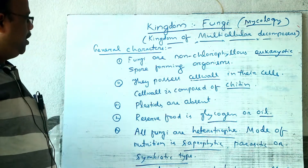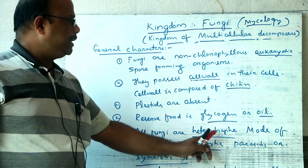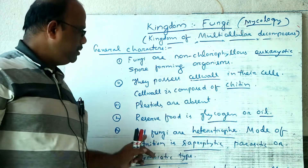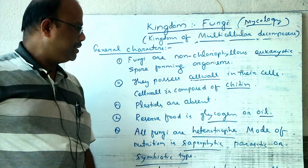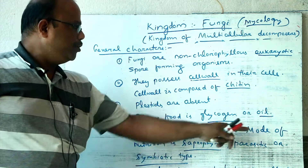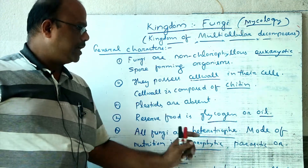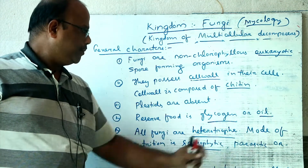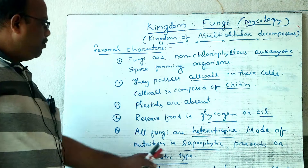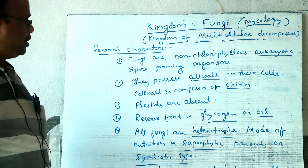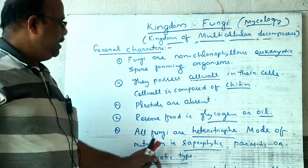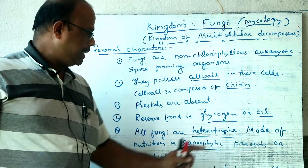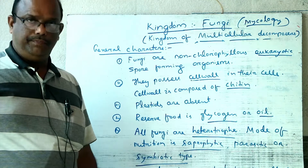All fungi are heterotrophic in nature because they have no chlorophyll pigments. The mode of nutrition of fungi is either saprophytic, parasitic, or symbiotic type.